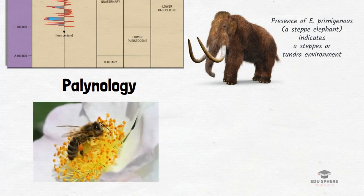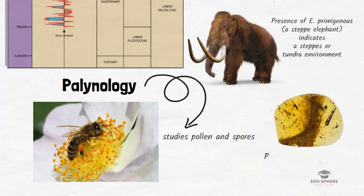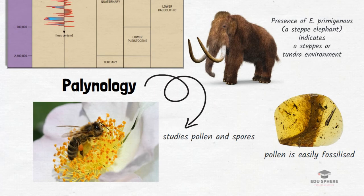Next is palynology. All flowering plants produce grains called pollens, and these are almost indestructible, surviving for many thousands and even millions of years in all types of conditions. Palynology is the branch of biology which studies pollen and spores. Because plants have been producing pollen for millions of years and pollen is essentially fossilized, this can help us study what the environment was like long ago, determine what ancient people ate, and even locate underground oil reserves.